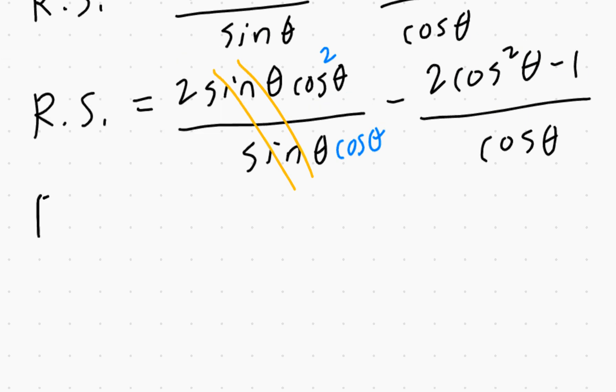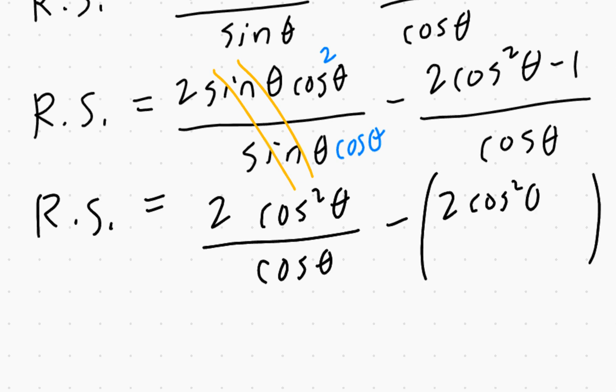That's going to be the left-hand side. So in case you're not connected yet, write this down. This is 2cos²θ/cos θ minus (2cos²θ - 1)/cos θ.